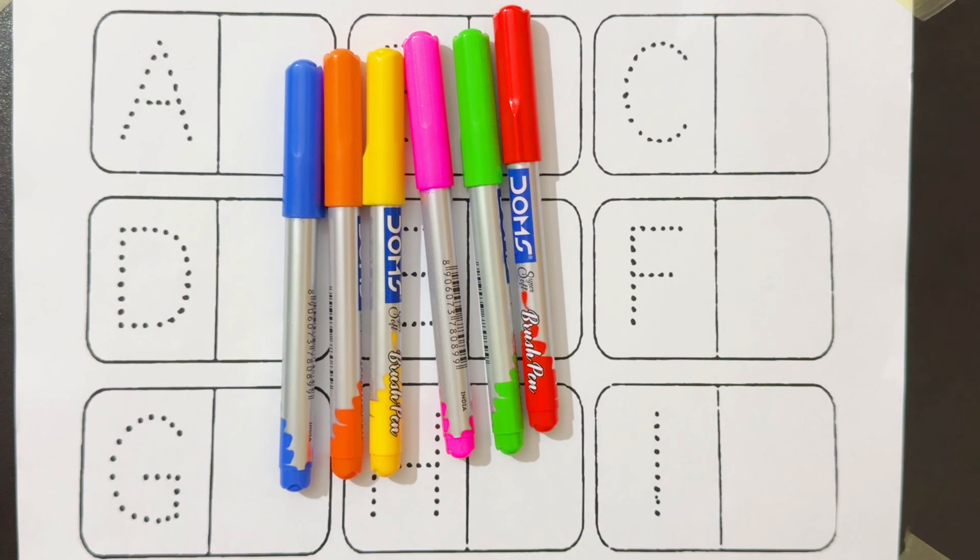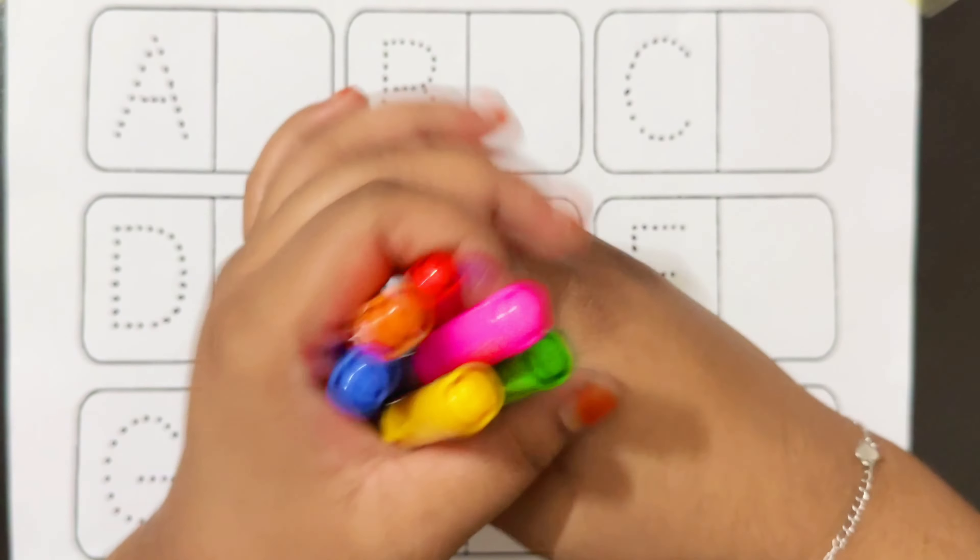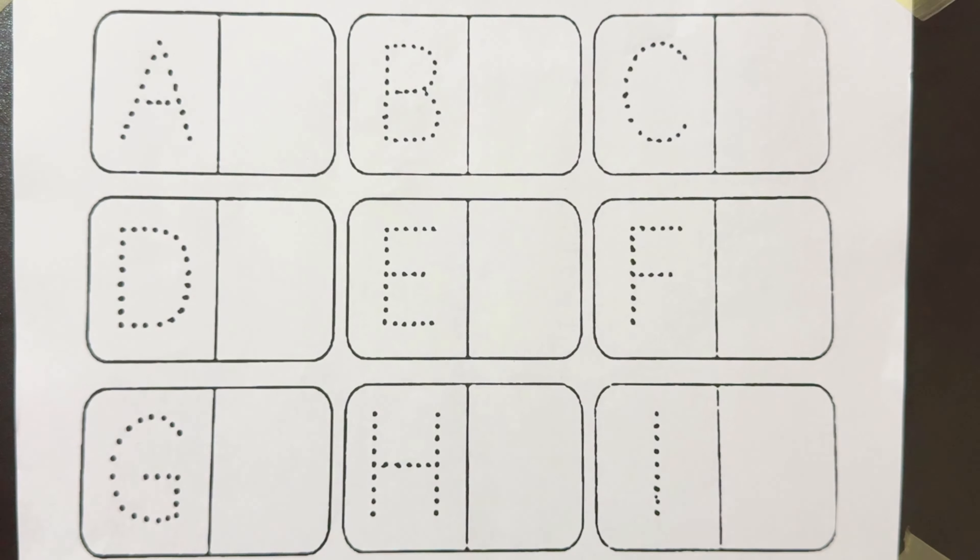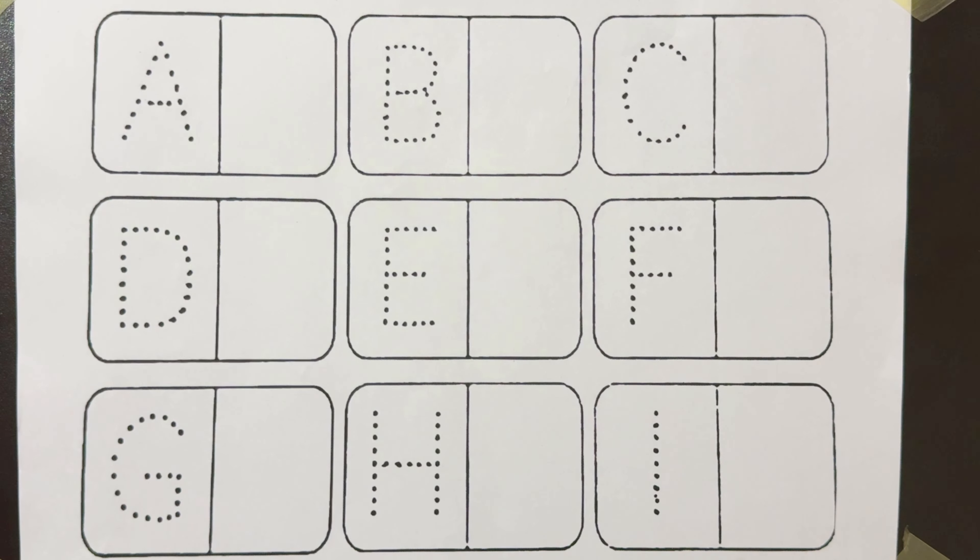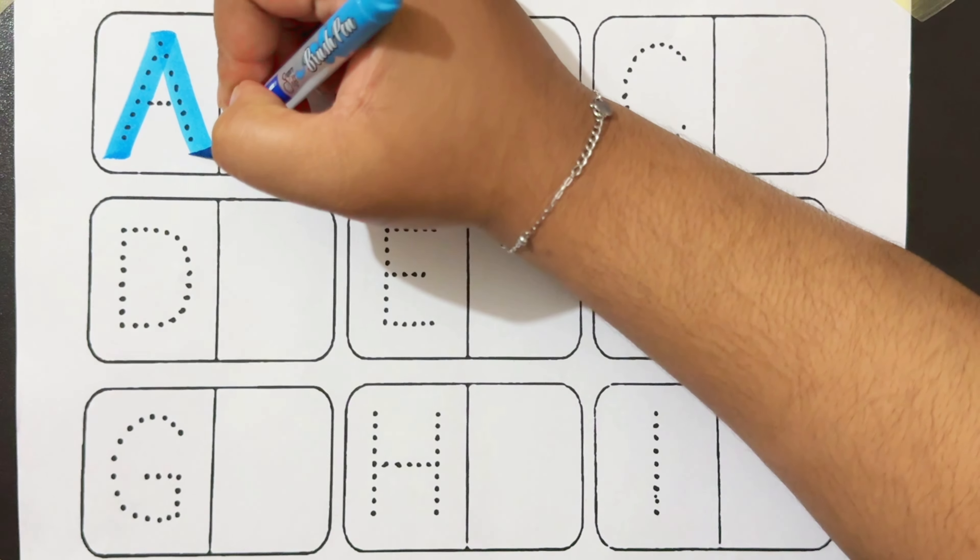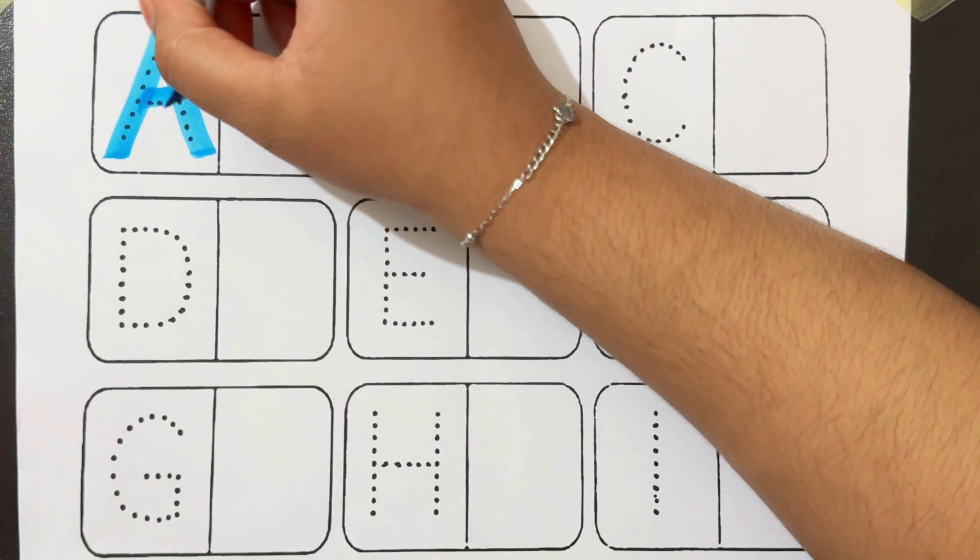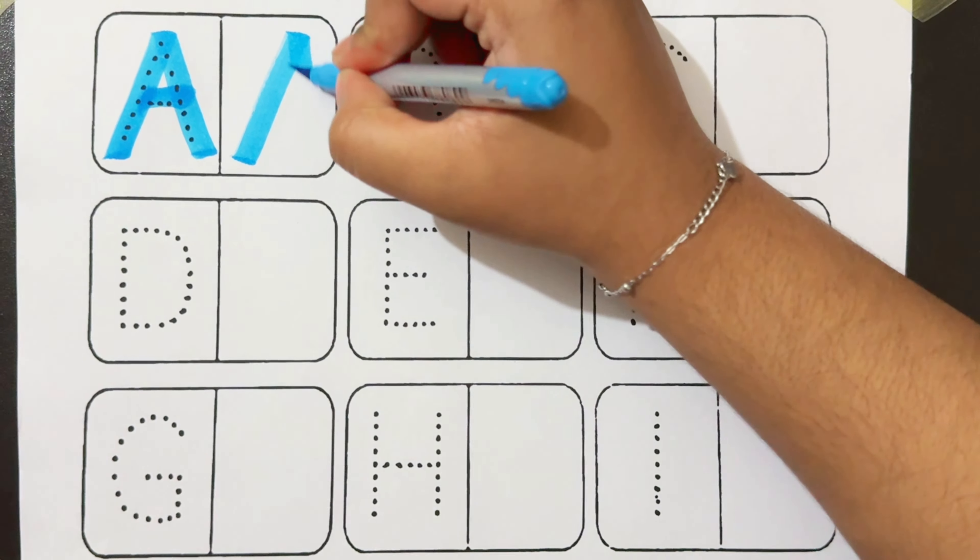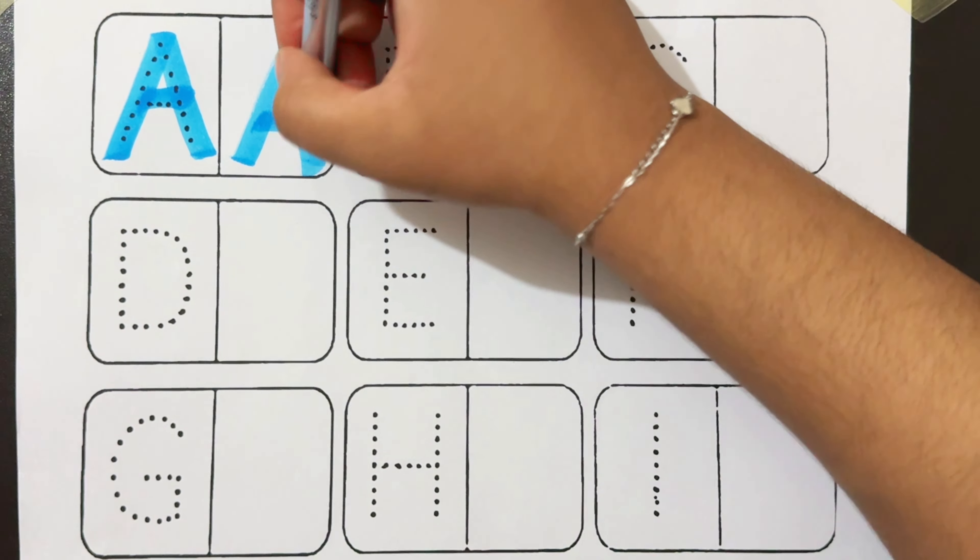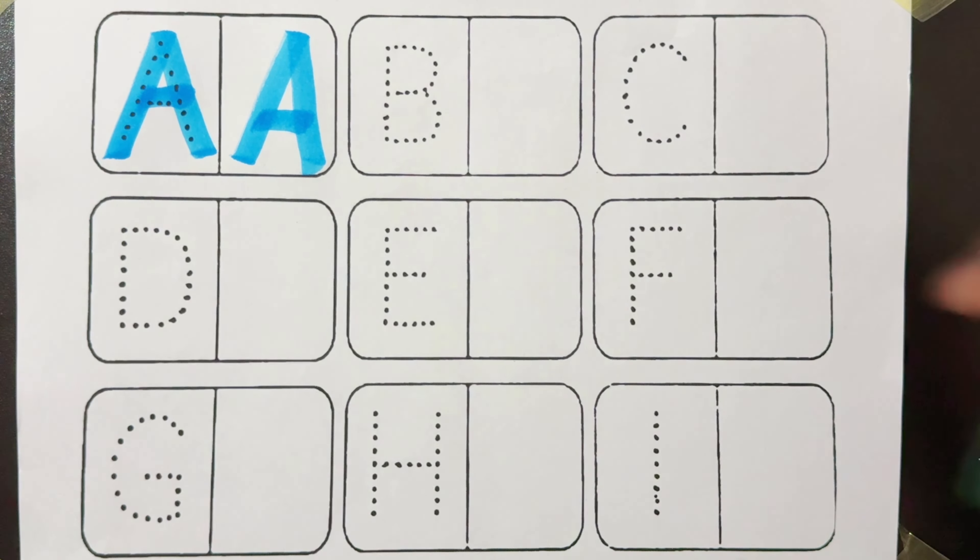Today we will learn uppercase alphabets A to I. Letter A: A for animals, A for apricot.